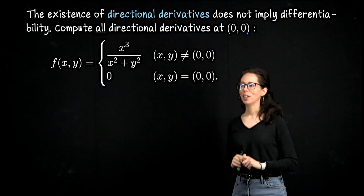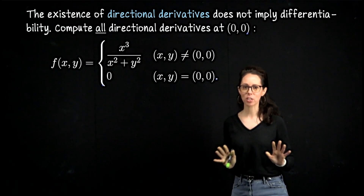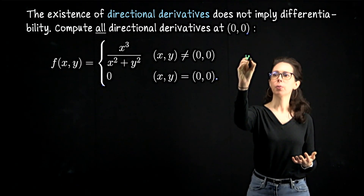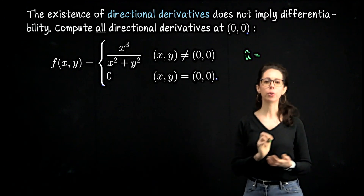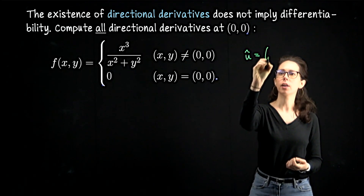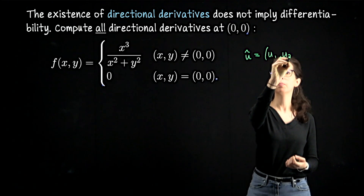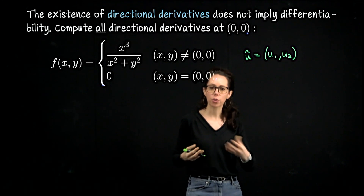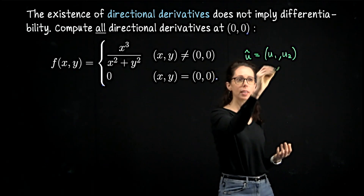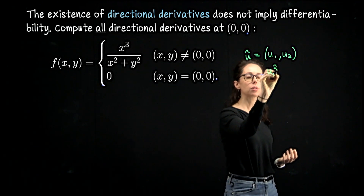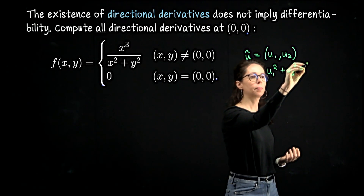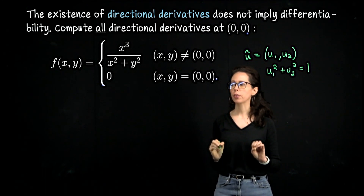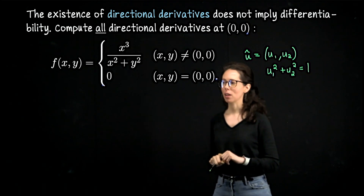We would like to compute all of the directional derivatives for this function at the origin. I'm going to let u-hat be a unit vector with coordinates u1, u2. Since it's unit length, u1² + u2² = 1. Let me set up the difference quotient we need to compute directional derivatives at the origin, and then I'll let you simplify a little bit, come back, and wrap it all up.